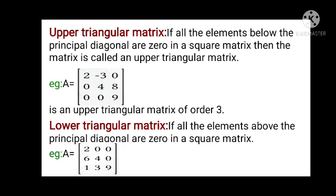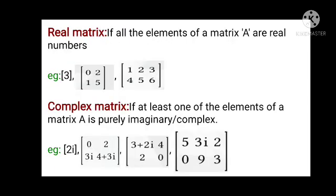Coming to the lower triangular matrix: if all the elements above the principal diagonal are 0, then it is said to be a lower triangular matrix.